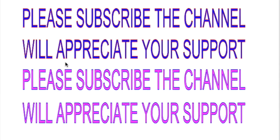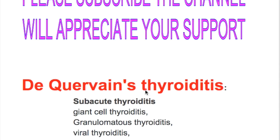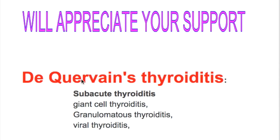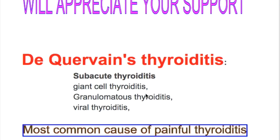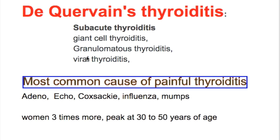In this video we will discuss De Quervain's Thyroiditis. De Quervain's thyroiditis is a sub-acute form of thyroiditis and is also known as giant cell thyroiditis, granulomatous thyroiditis, or viral thyroiditis.